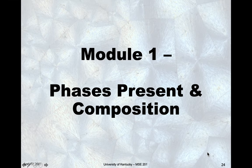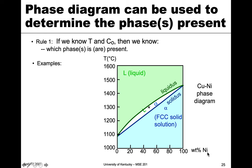In this module we're going to look at how to determine what phases are present and the composition of those phases. We're going to do this with the isomorphous phase diagram that we looked at in the last module. Phase diagrams allow us to determine what phases are present, and they also allow us to determine composition. The main way we go about this is that we have a specific temperature and composition in mind, and then use the phase diagram to determine what phase or phases are present.